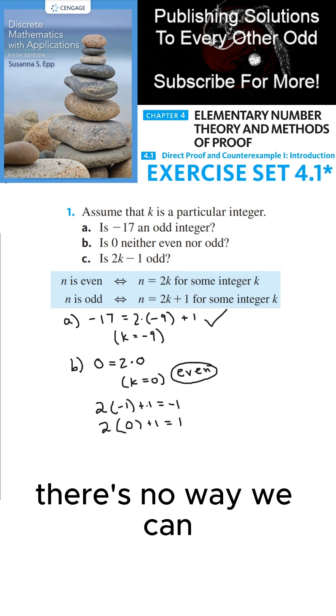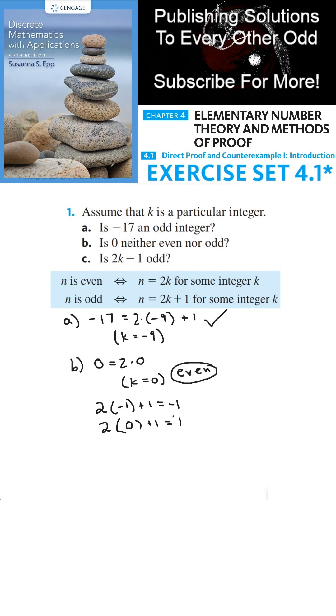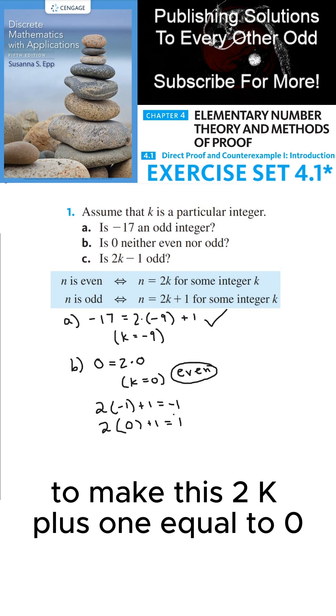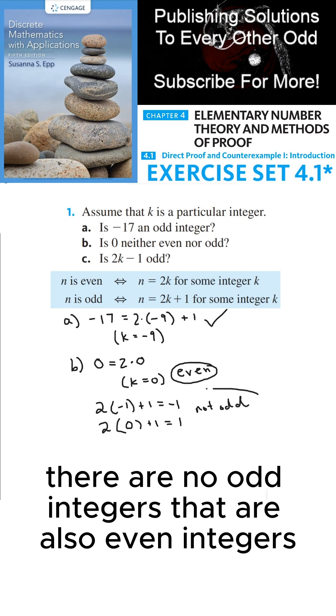There's no way we can fit an integer between negative 1 and 0 to make this 2k plus 1 equal to 0. So 0 is not odd. And in fact, there are no odd integers that are also even integers and vice versa.